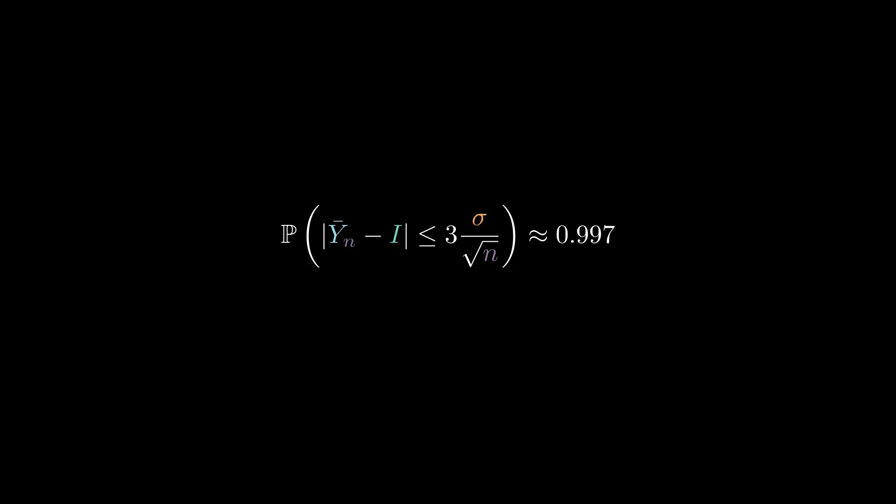Observe that we could have chosen t to make the probability arbitrarily close to 1. Thus, we can see that the error is of order 1 over the square root of n.